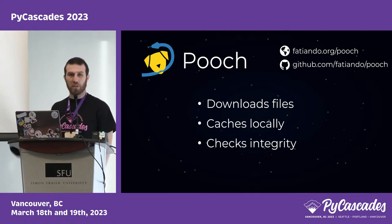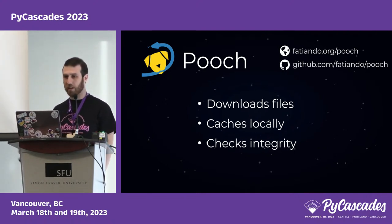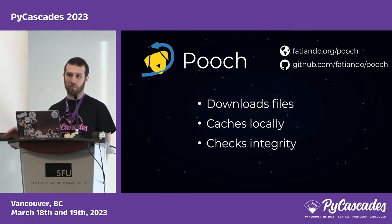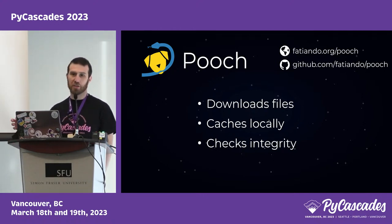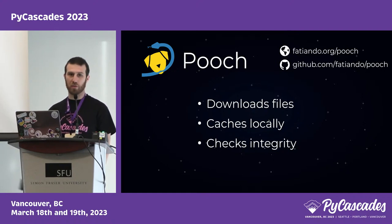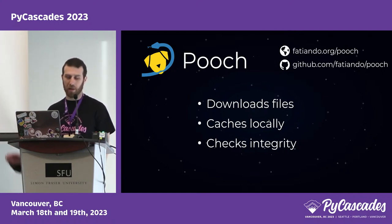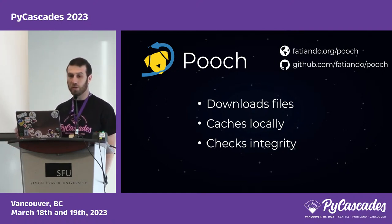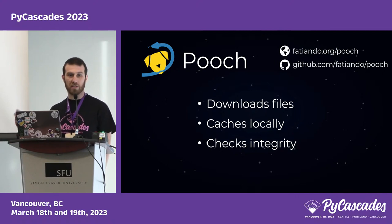Pooch is an open source Python library that allows you to download files from the web through different protocols. It caches the files locally so you don't have to re-download them, saving time and bandwidth. And it also can check the integrity of those files while downloading.